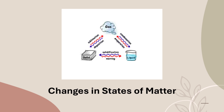In some cases, solids directly change into gases without going to the liquid state. This is called sublimation, and it happens in very rare cases — such as naphthalene balls or camphor. The naphthalene balls kept between clothes get reduced in size or disappear completely because they change directly into gaseous form.